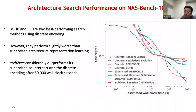We compare the architecture search performance of our approach. Specifically, we reproduce existing discrete encoding-based methods using random search and regularized evolution as baselines.